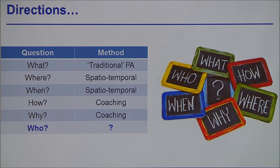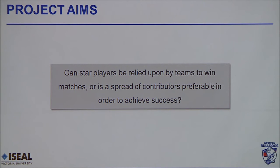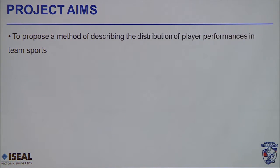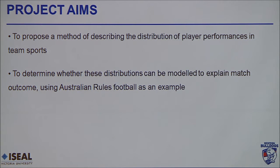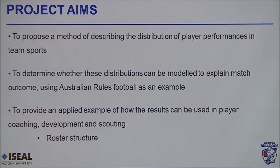Looking at a snapshot of where analysis in Australian rules football currently is: traditional performance analysis has addressed the what-type questions; spatiotemporal data is allowing investigation of where and when; but the who questions remain unresolved. Going back to our first aim — can we look at whether we want a spread of contributors or just superstars? The three main aims of this project are: to describe the distribution of player performances in team sports and provide a method to do that; use those distributions to model and explain match outcome; and provide an applied example of how we can use this to structure our rosters.